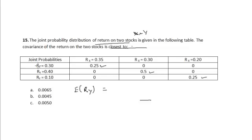return on stock Y in that particular state. So it will be equal to 0.25 times 0.3 plus 0.5, that is the probability of the second state, multiplied by the return on stock Y corresponding to the second state, that is 0.4, plus 0.25 times 0.1, which will be equal to 0.3.